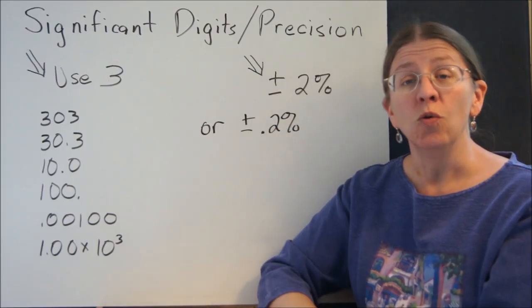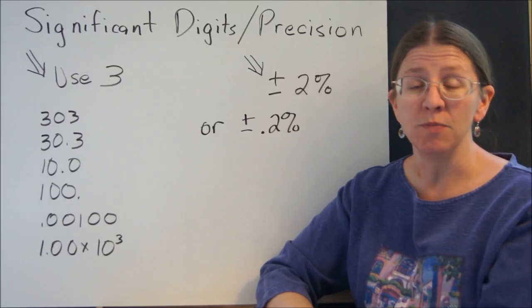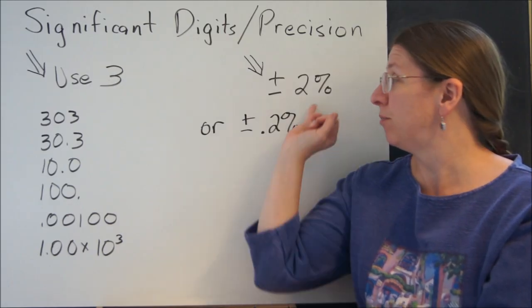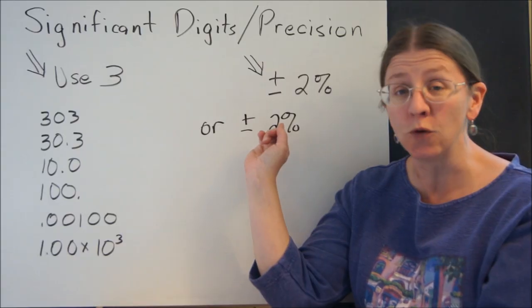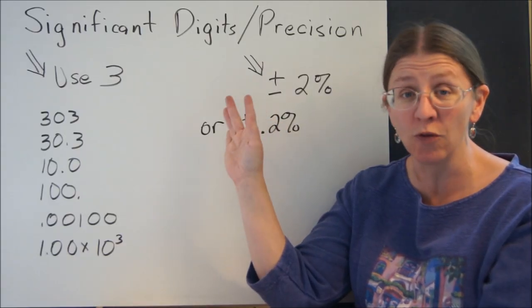In engineering, we rarely know anything much better than plus or minus 2%, sometimes plus or minus 0.2% if we're being careful.